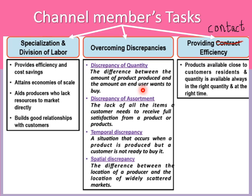Second is discrepancy of assortment: the lack of all items a consumer needs to receive full satisfaction from a product. Assortment refers to the variety of products needed together. For example, a torchlight manufacturer may only produce the torchlight, but you also need a battery to use it. Mr. DIY, acting as a retailer channel member, bundles the torchlight and battery together so you get full satisfaction from your purchase.